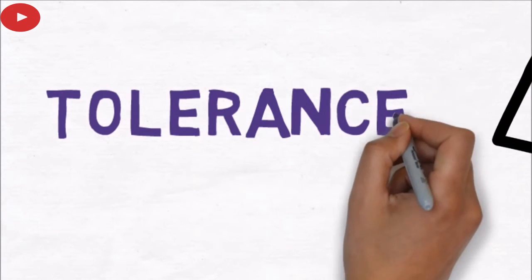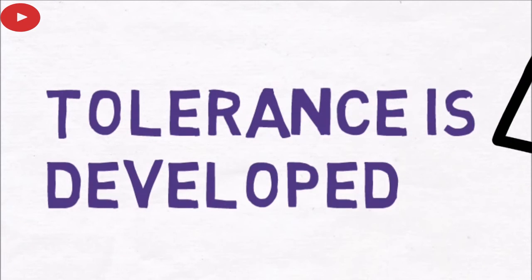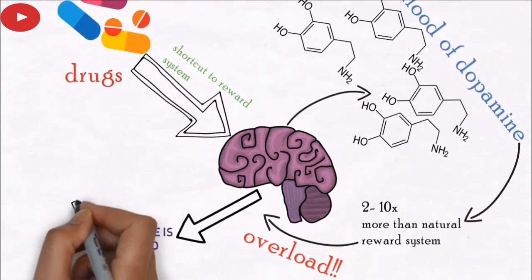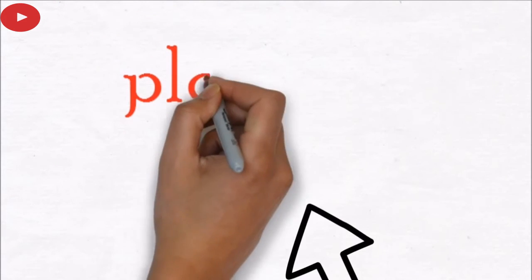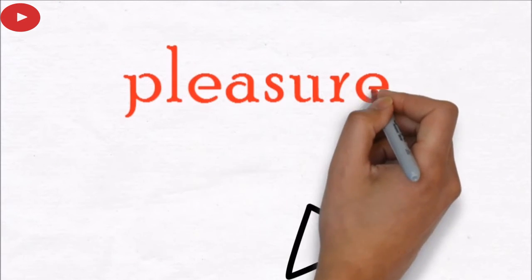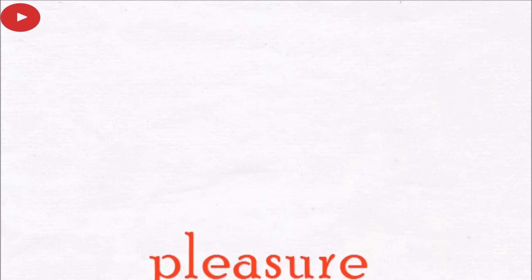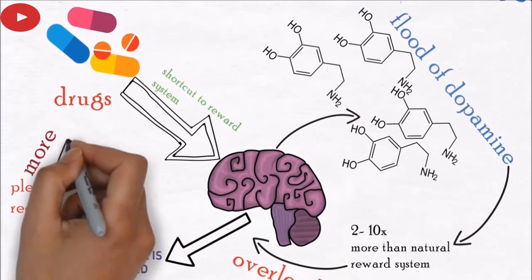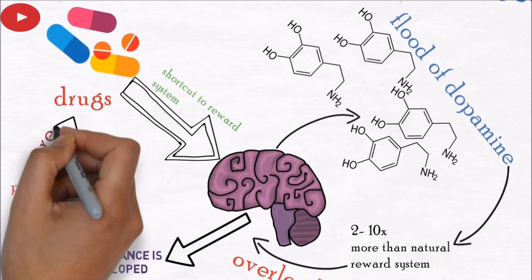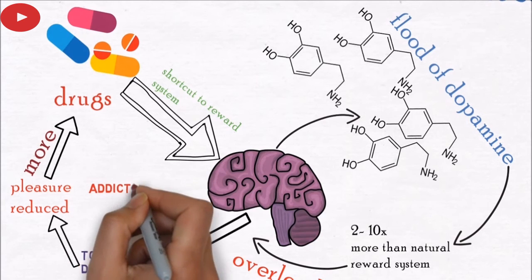Once overloaded, the brain responds by eliminating dopamine receptors, so now the drug has less impact on the reward center — this is tolerance. The user then needs more to reach the same high, and the memory of the drug causes a desire to recreate the effect.